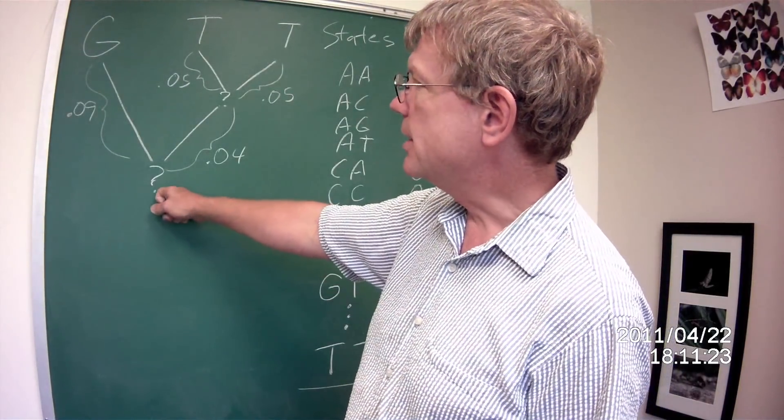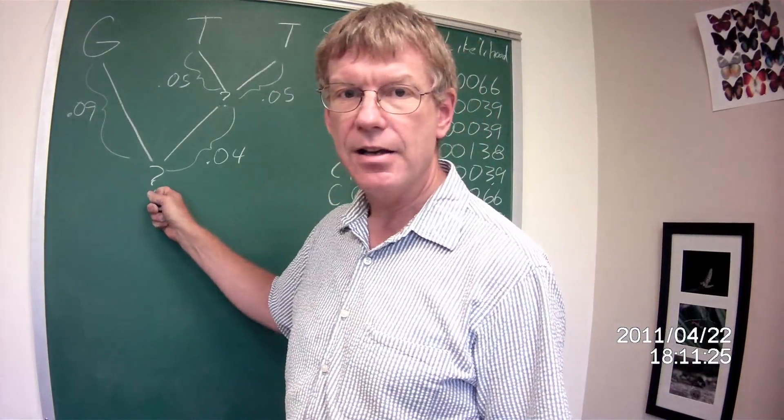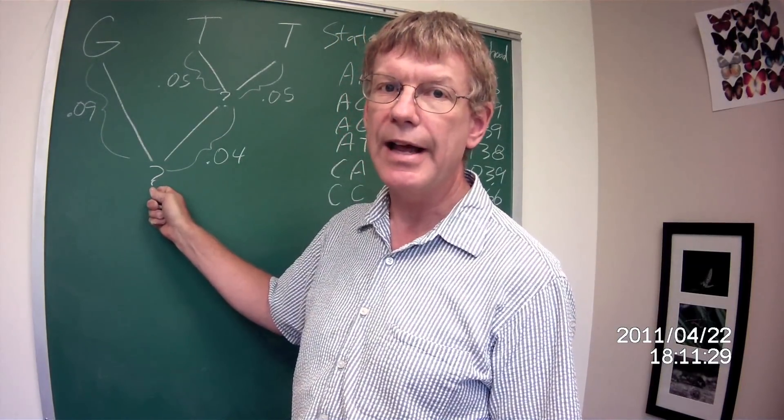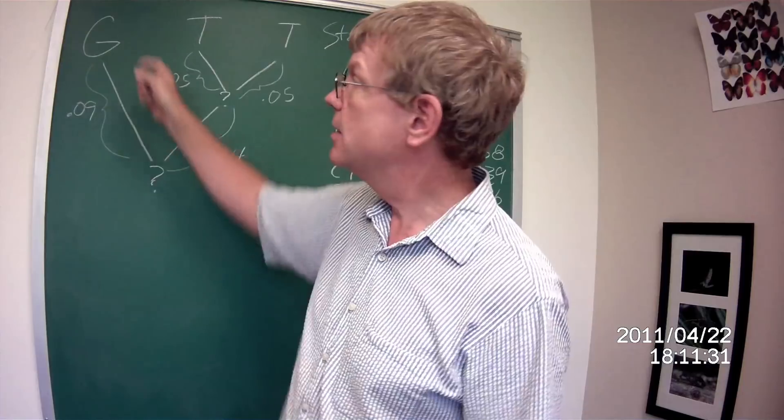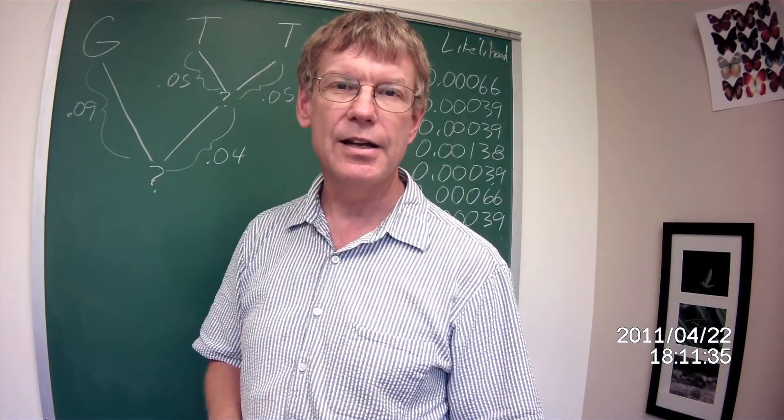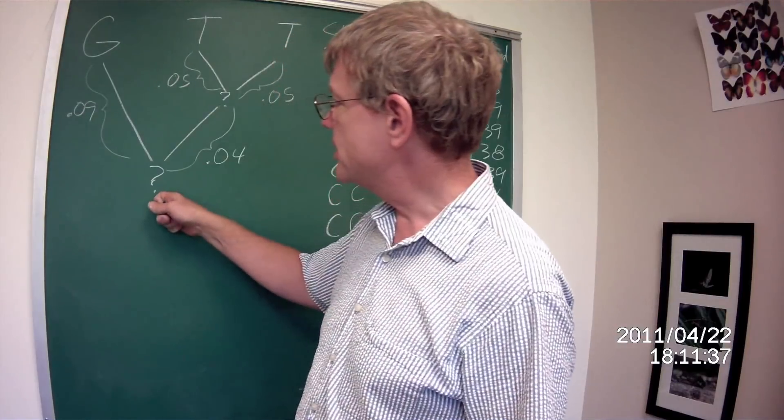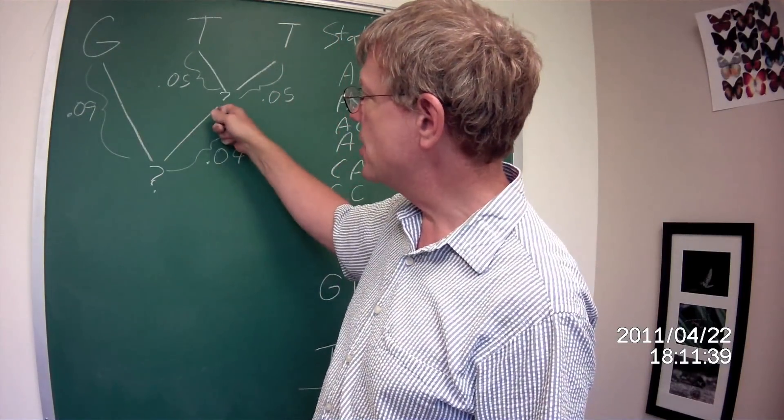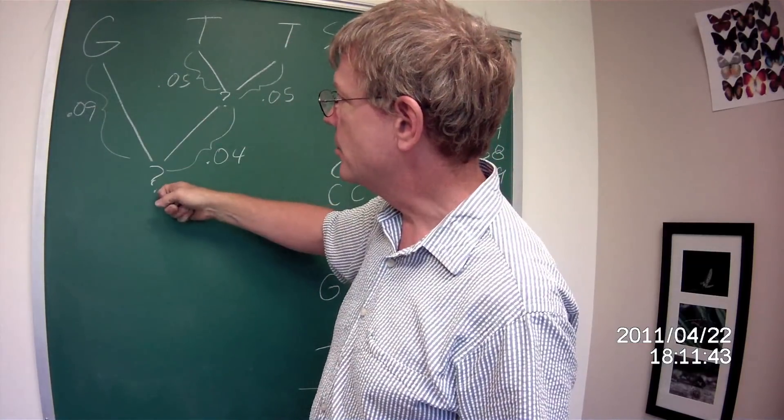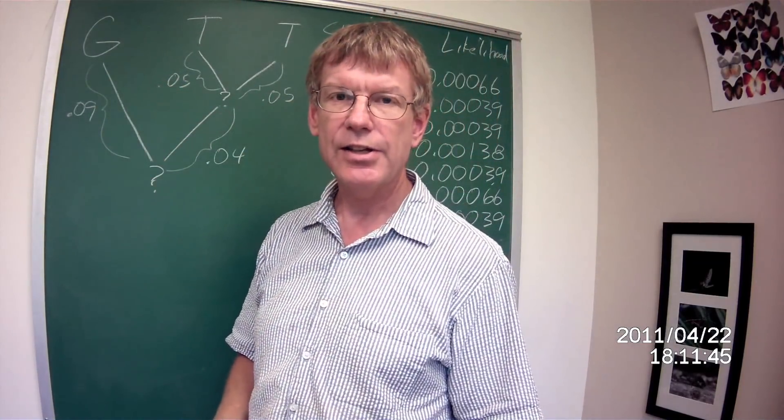What is the probability that this was an A? Is it zero? No, of course not. It could have been an A. Not likely because none of the terminal states, none of the observed data are A. But the probability that this is an A and this is an A, and then it changed to a T and a T, and from here to here changed to a G. That's small.